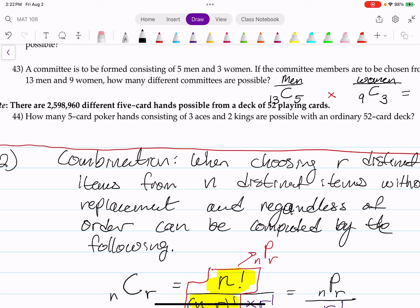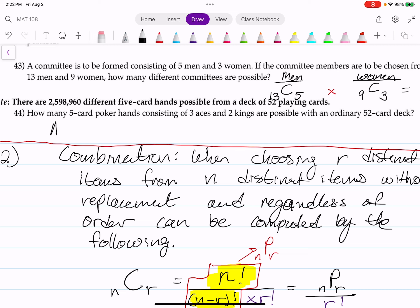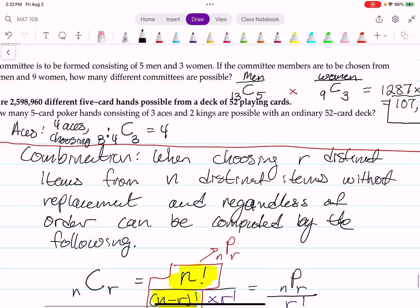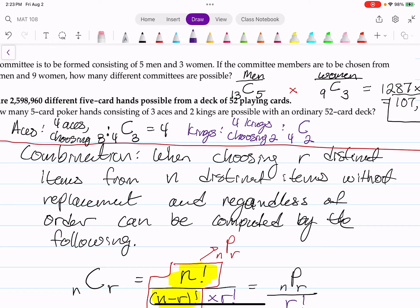So for our aces, we have four aces and we're choosing three, and we know the order doesn't matter and the items are distinct. That is the combination of four choose three, and the combination of four choose three equals to four. For our kings, we have four kings and we're choosing two. Once again the order doesn't matter and items are distinct, so that's the combination of four choose two. The combination of four choose two is going to be six.